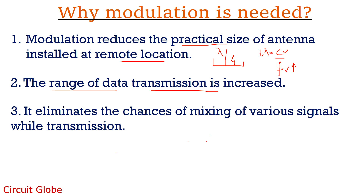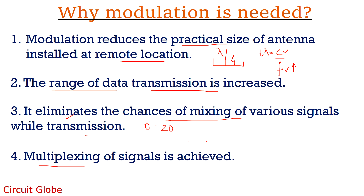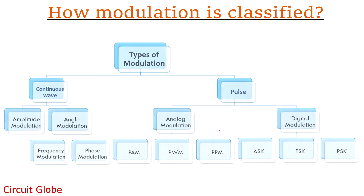Through modulation, the chances of mixing of various signals during transmission is reduced to a large extent. Consider that we have various message signals falling in the range between 0 to 20 kHz. As the frequency range of various signals is the same, while transmission through a common channel, there are very large chances that the signals mix with one another. But by modulating the signal with different carrier frequencies, their separation can be easily achieved at the destination. So through modulation, multiplexing of signals can be achieved as various signals can be transmitted to longer distances through a common communication channel without much attenuation and mixing.